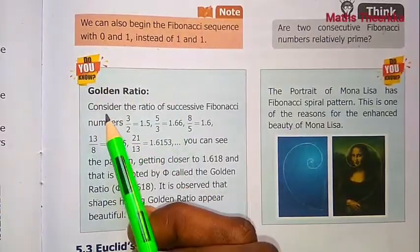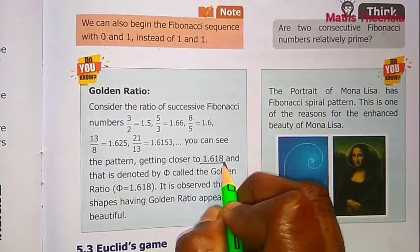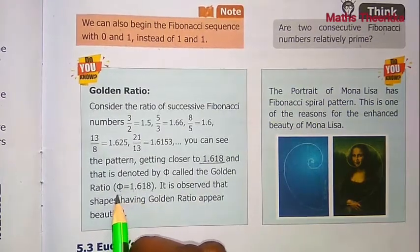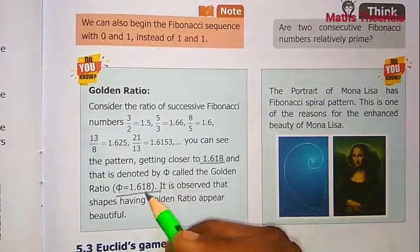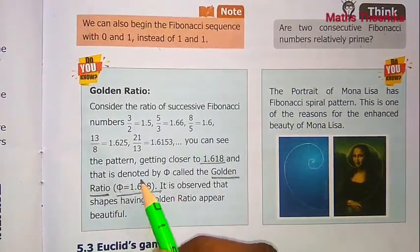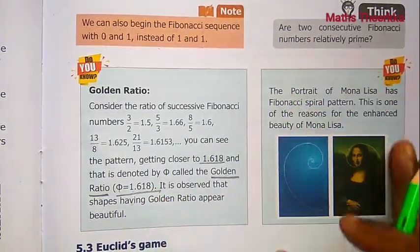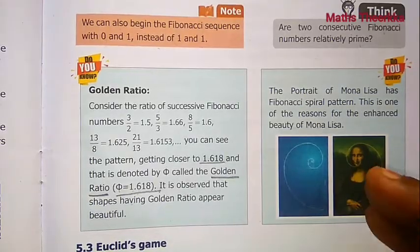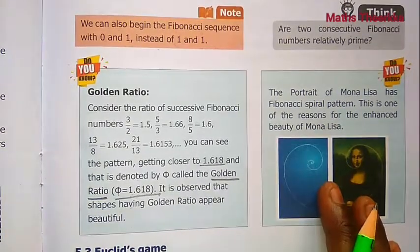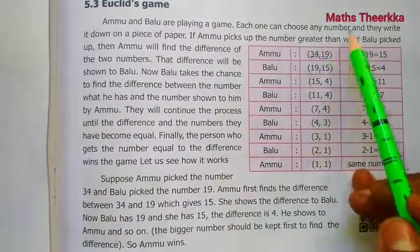Do you know the golden ratio? The golden ratio is 1.618.